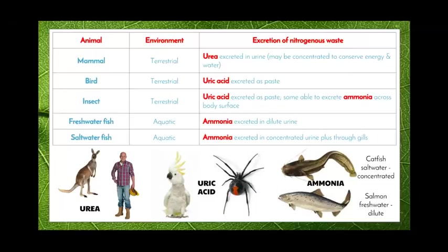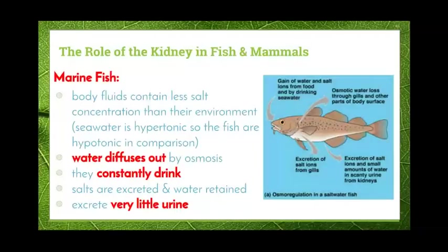Looking at fish, both freshwater fish and saltwater fish live in aquatic environments and both excrete ammonia. However, freshwater fish excrete ammonia in a dilute urine with lots of water, whereas saltwater fish excrete their ammonia in a concentrated urine with only a small amount of water.